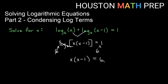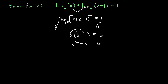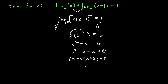We cannot set factors equal to zero here because we have a 6 on the other side, so we need to distribute and get everything equal to zero. Distributing x gives us x squared minus x equal to 6. Moving everything to the left side, we get x squared minus x minus 6 equal to zero. Factoring this trinomial, we need things that multiply to get negative 6 and add to get negative 1, giving us factors (x minus 3) and (x plus 2) equal to zero.